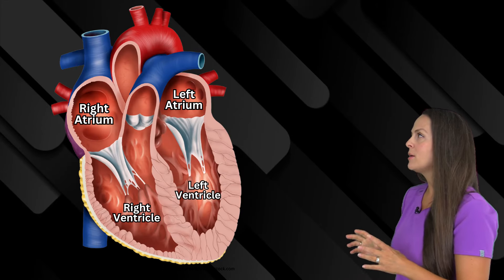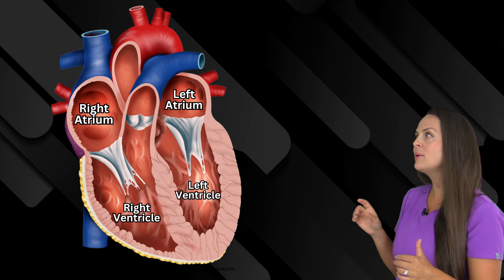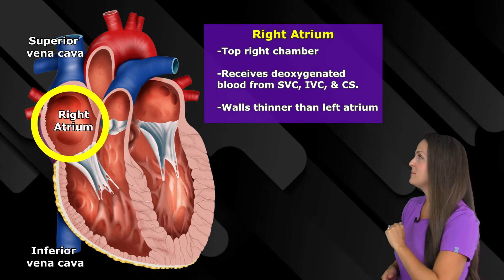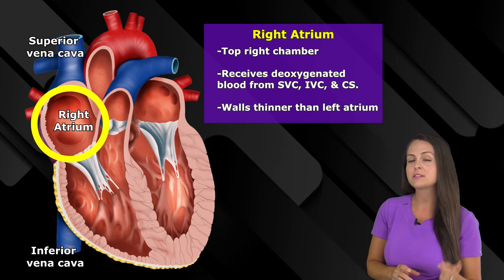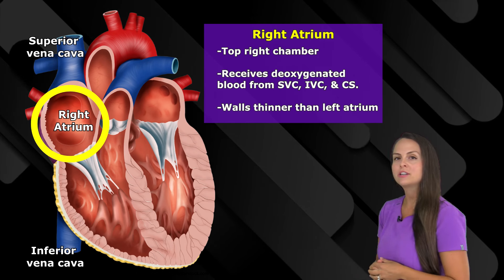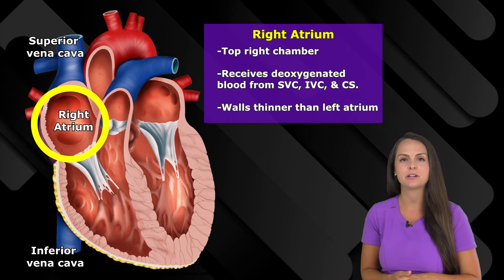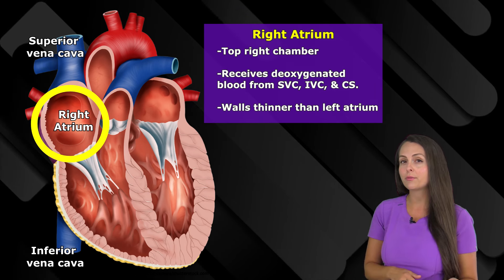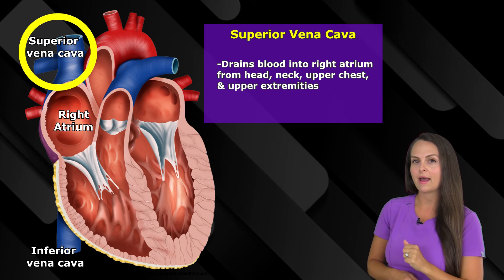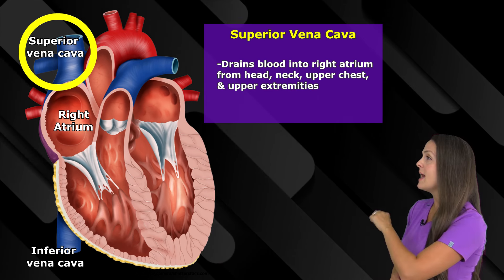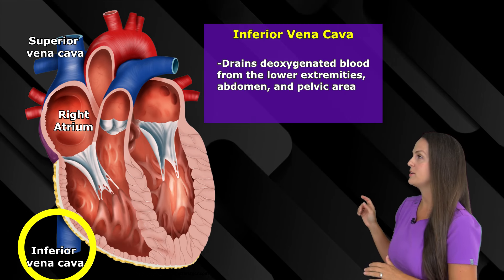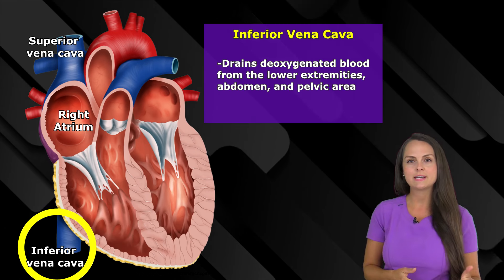Let's take it chamber by chamber in the sequence of how blood really flows through the heart, starting on the right side. The right atrium is the top chamber that receives deoxygenated blood from the superior vena cava, inferior vena cava, and the coronary sinus. The walls of the right atrium are thinner compared to the left atrium because pressure is lower on the right side. The superior vena cava drains deoxygenated blood from the head, neck, upper chest, and upper extremities, while the inferior vena cava drains deoxygenated blood from the lower extremities, abdomen, and pelvic area.